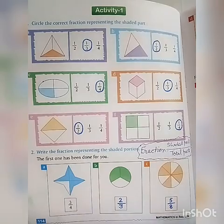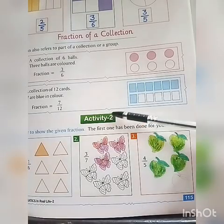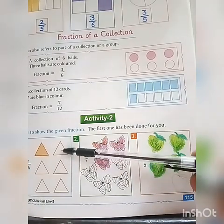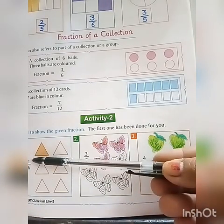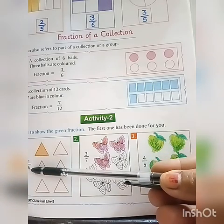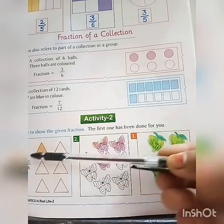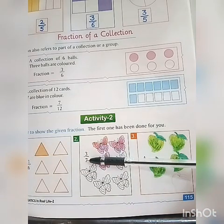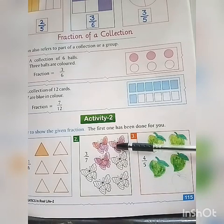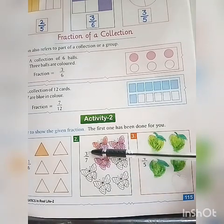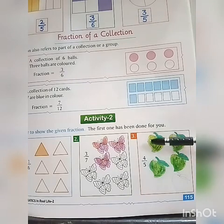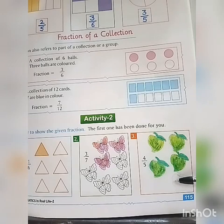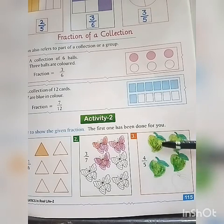The remaining parts are on the next page and you will do it yourself. In Activity Two, fractions are given and we have to color in the figures accordingly. The first question is one upon six - total parts are six and we color only one triangle. The next question is three upon seven - total butterflies are seven and we color only three. Question three is four upon five - total mangoes are five and we color only four mangoes.